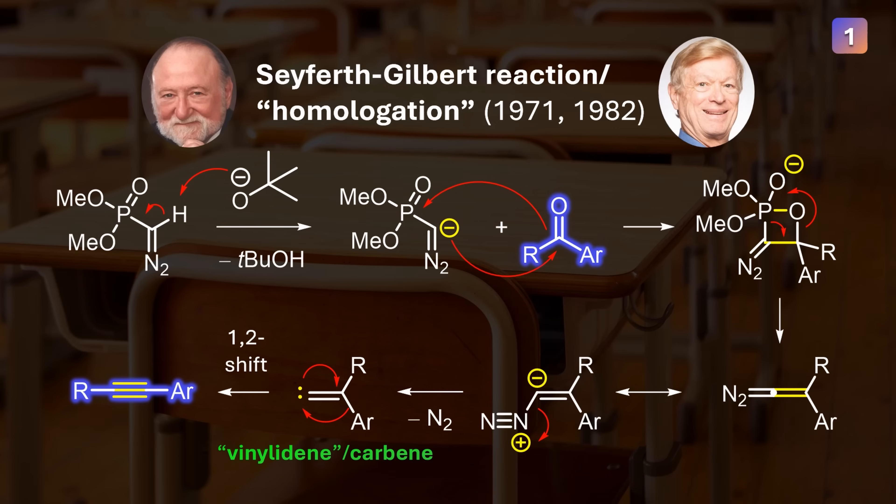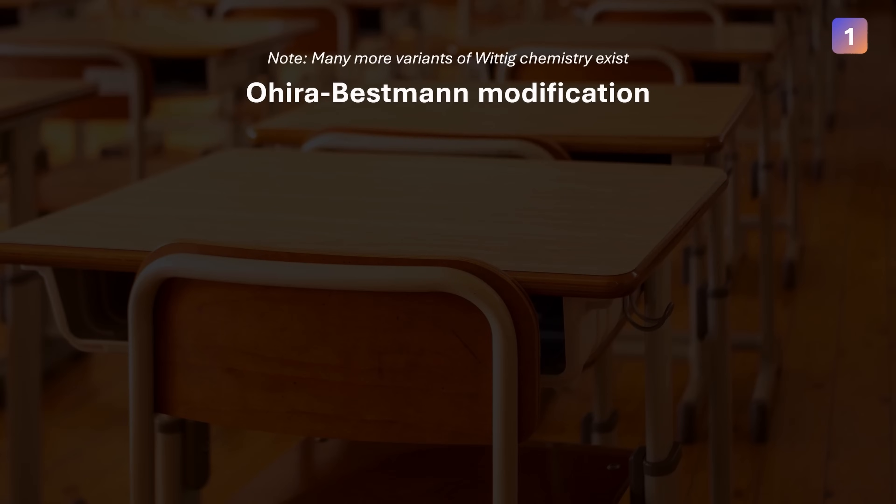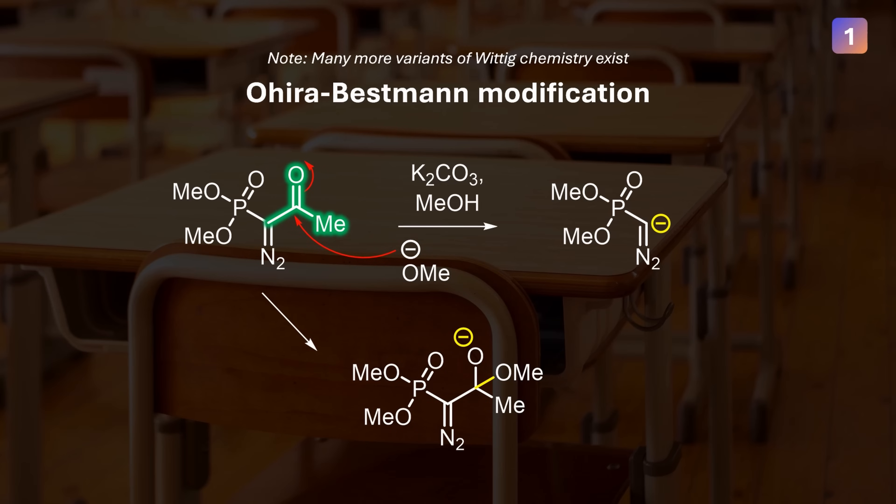As a side note, you will more commonly see the Ohira-Bestmann modification of this reaction, which has a ketone attached to the alpha carbon. This is a milder way of getting to the same alkyne. Instead of adding a strong base that might wreck other parts of our molecule, methanol and a weaker carbonate base leads to the active species after initial nucleophilic attack of methoxide.